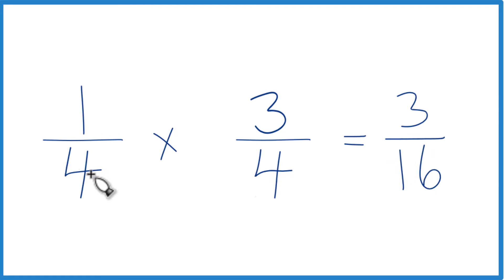So one-fourth times three-fourths, that's three-sixteenths. Or you could call this one-fourth of three-fourths. That would give you three-sixteenths.